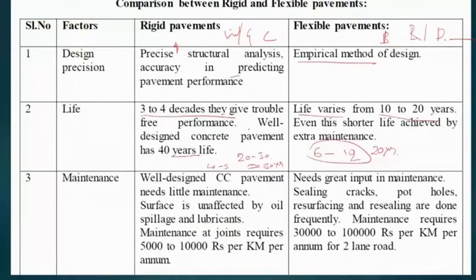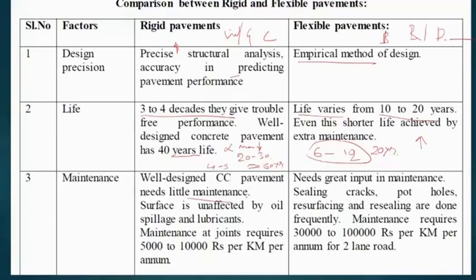Rigid pavement is maintenance-free or demands very little maintenance. Flexible pavement, even with its shorter life, demands a lot of maintenance over the 6 to 12 year period. A well-designed cement concrete pavement needs very little maintenance, but if quality control is not maintained during construction, the maintenance cost of rigid pavement will be very high.